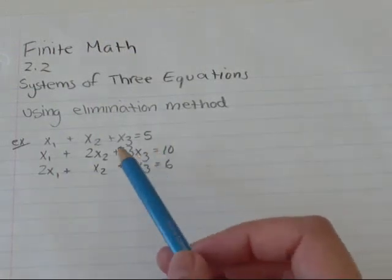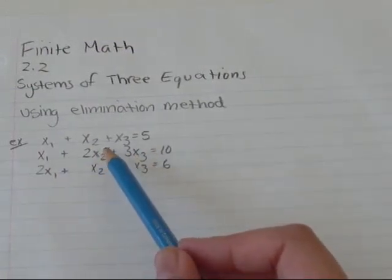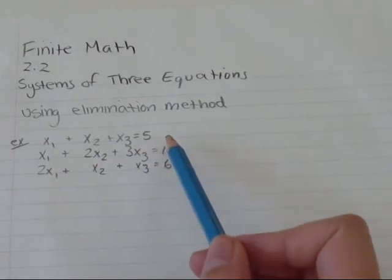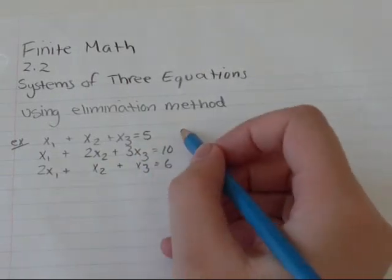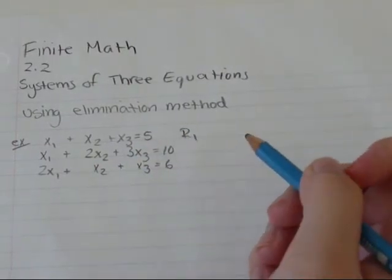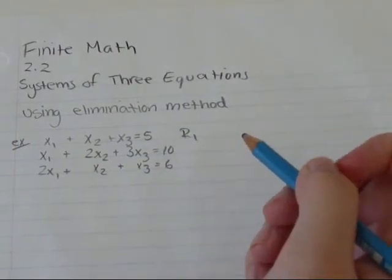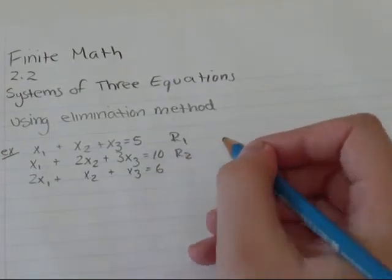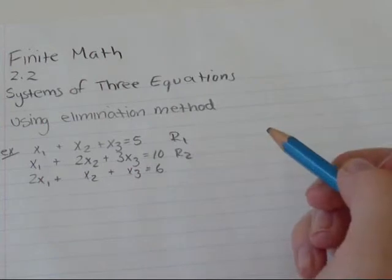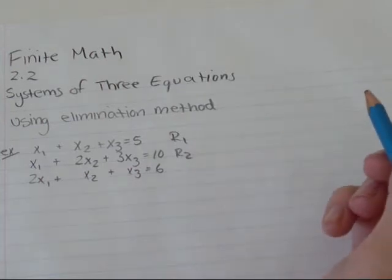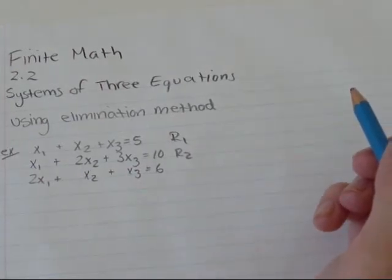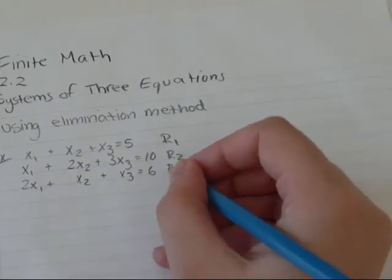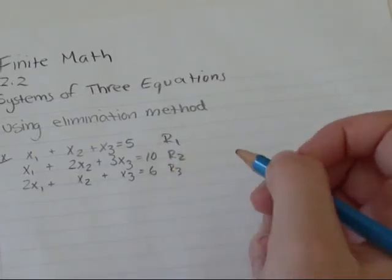For this example: x1 plus x2 plus x3 equals 5 is row 1. x1 plus 2x2 plus 3x3 equals 10 is row 2. And 2x1 plus x2 plus x3 equals 6 is row 3.